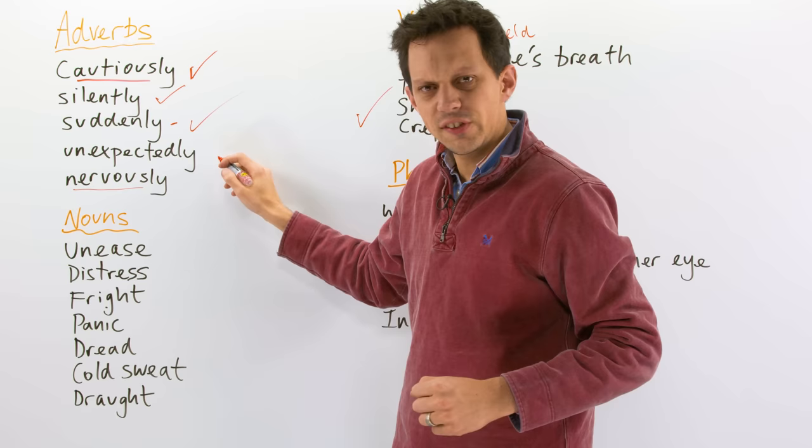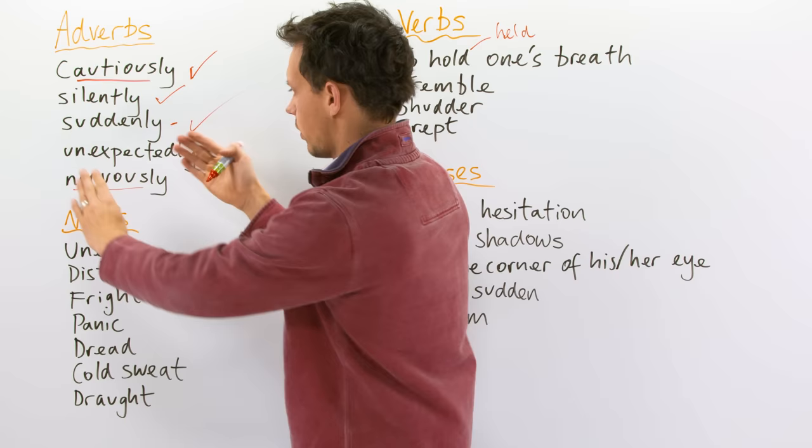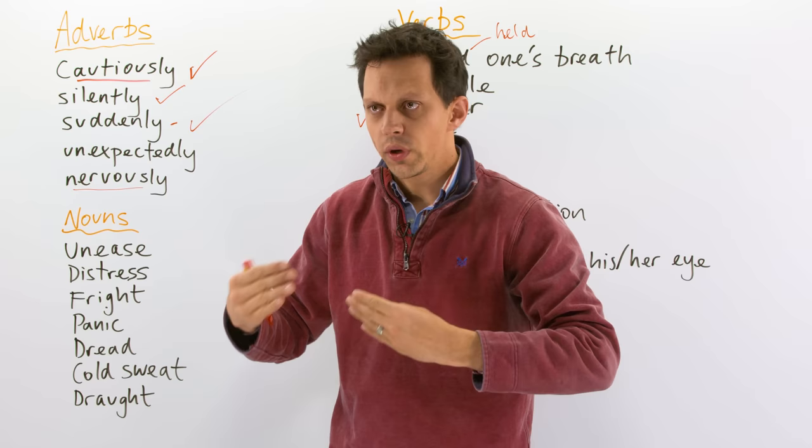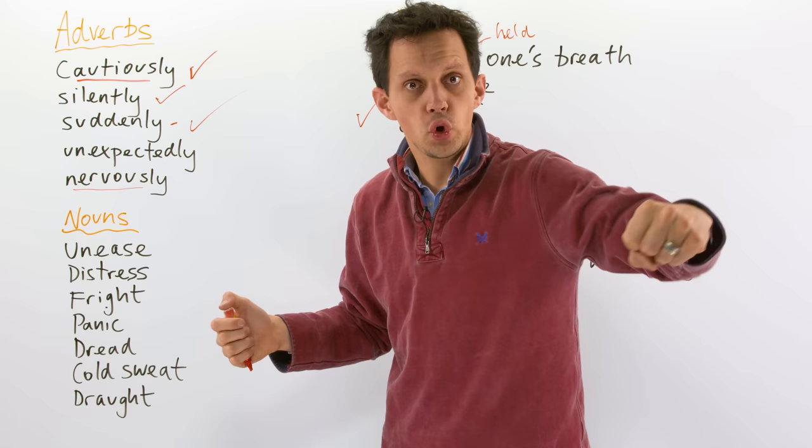Unexpectedly. So, prefix un means not. Expect something we think is going to happen. So, suddenly something we don't think is going to happen, happens. Unexpectedly. What could happen? A door opened.